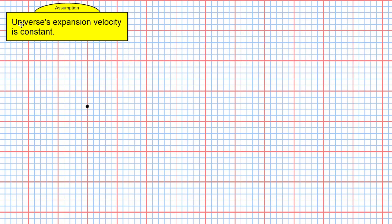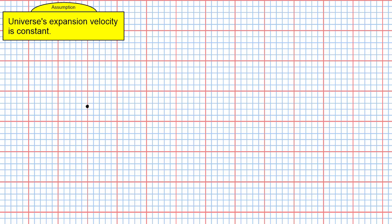Let's find the age of the universe using Hubble's constant. We start off with an assumption that the universe is expanding with a constant velocity. Here we have the situation where the universe is expanding from its beginning with a constant velocity v.